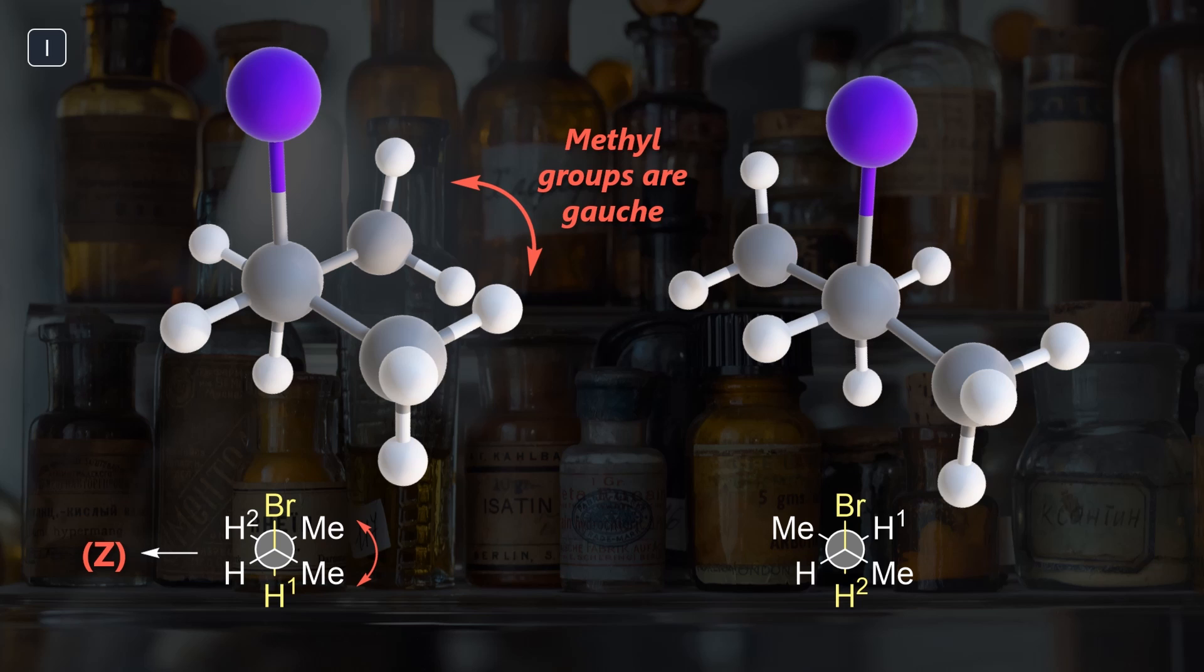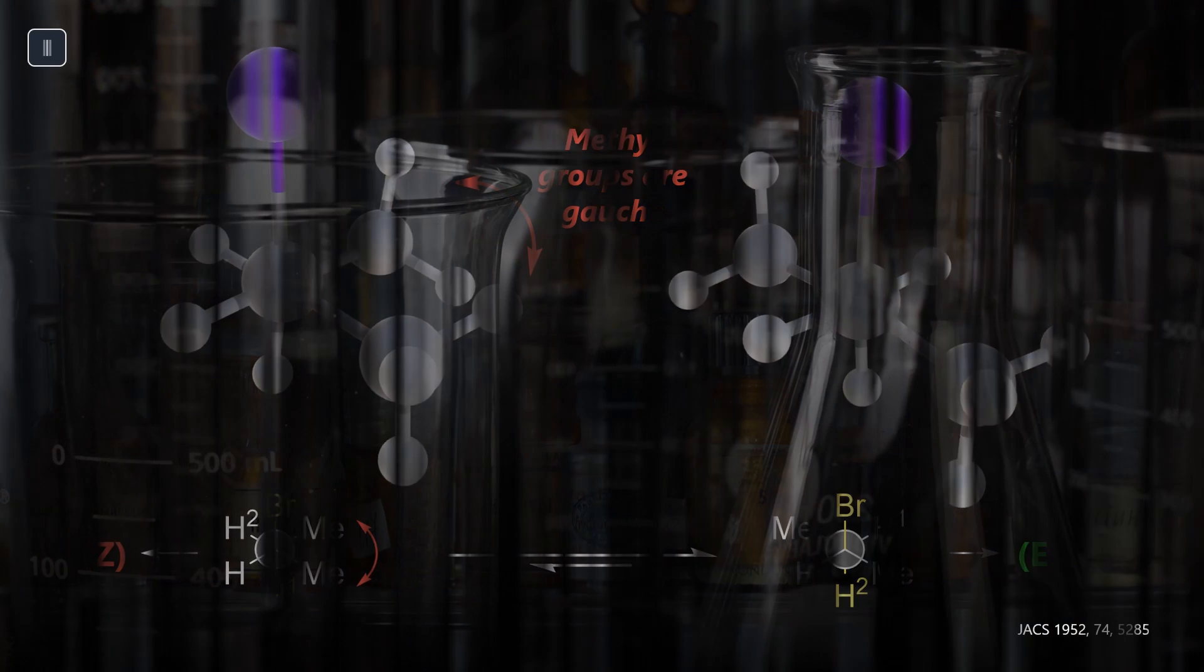If we rotate the single bond by 120 degrees, we can eliminate this unfavorable gauche interaction. Upon deprotonation of this new H2, the methyl groups are antiperiplanar and nicely avoid each other. The conformational equilibrium lies on the right side, thus the E isomer is formed preferentially.